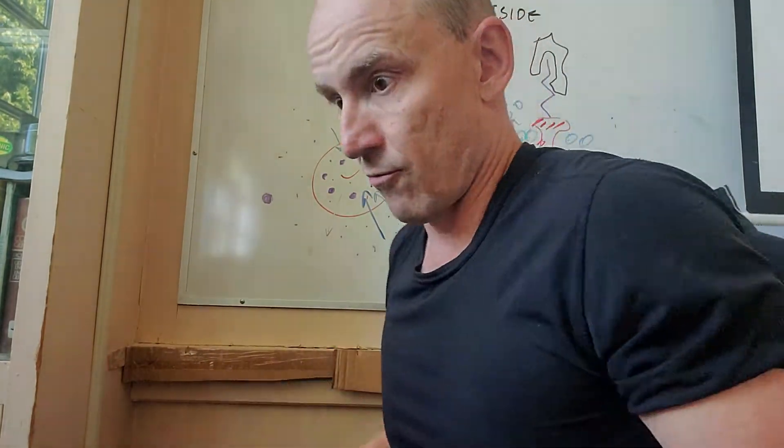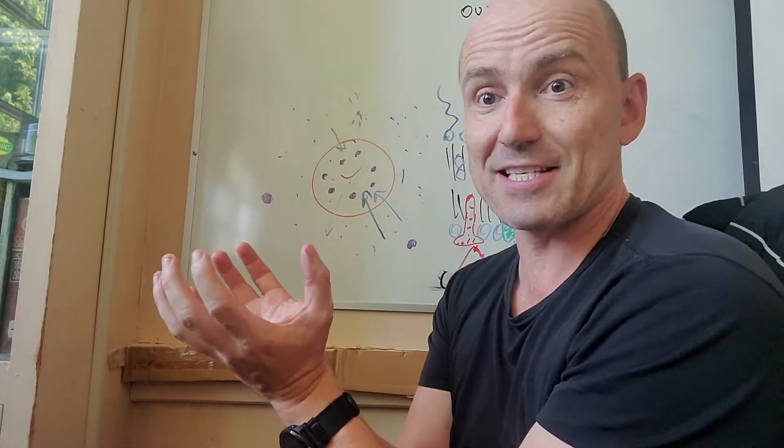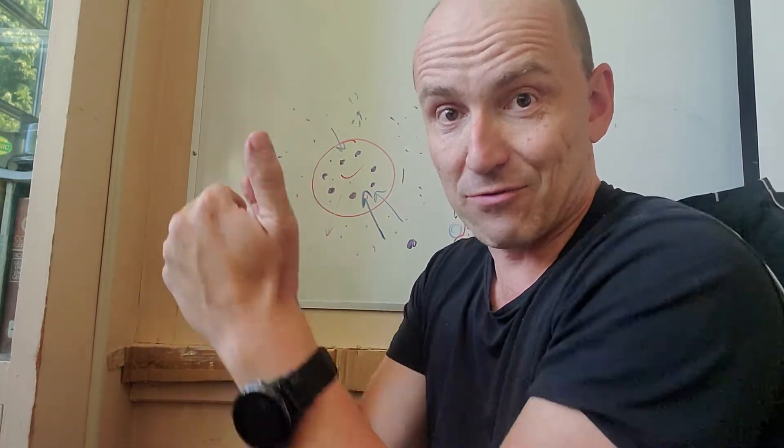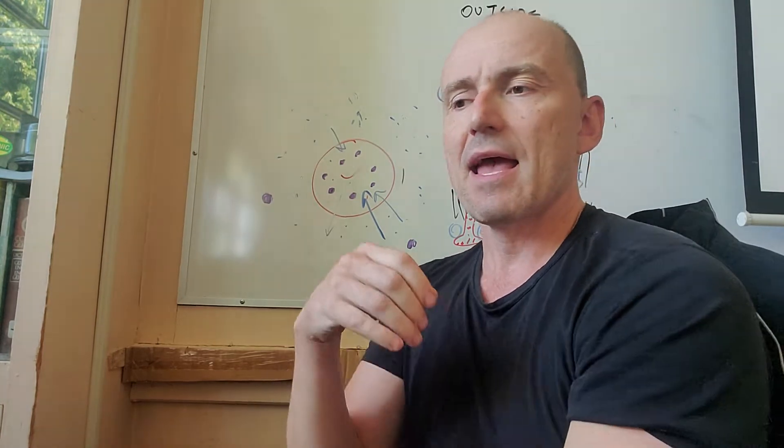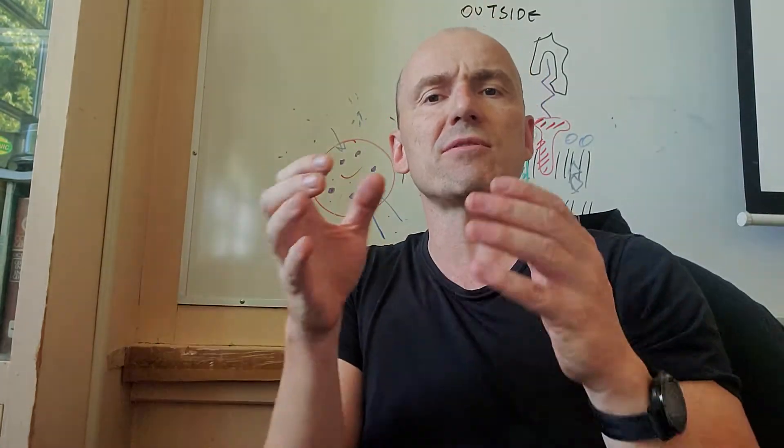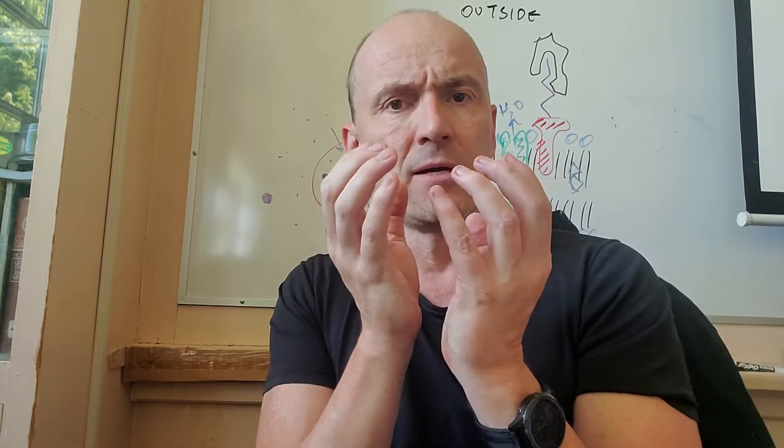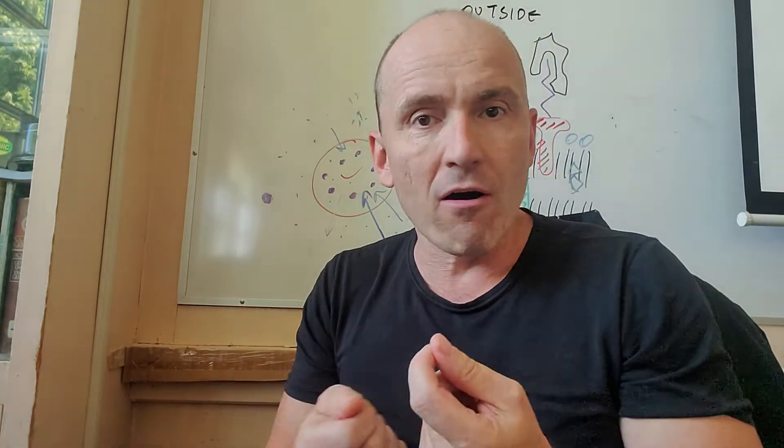So what is surface area to volume ratio? Well, surface area to volume ratio is how much surface area there is and how much volume, the ratio of how much volume there is on the inside. And this is what limits the size of cells, is this surface area to volume ratio. The volume represents the interior of the cell. That is where metabolism is happening. That is where stuff is going on.